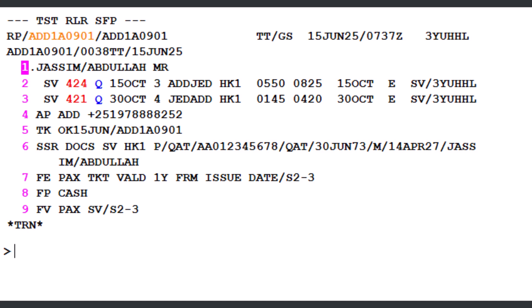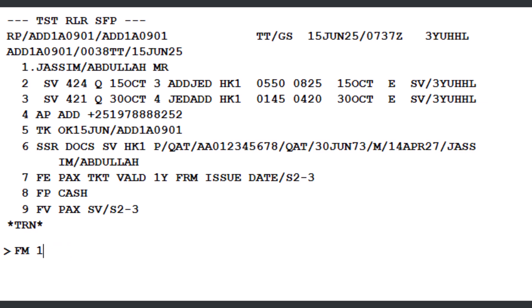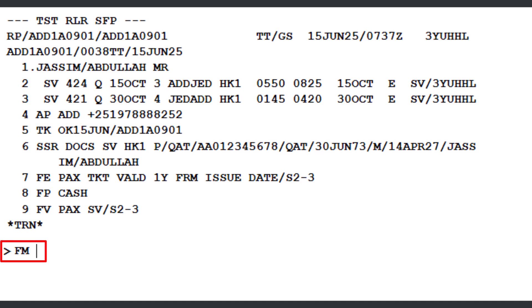The next required ticketing element is commission. Use the FM (commission identifier) followed by the value. This can be a fixed amount or a percentage. For example, to enter a fixed commission of 100 Ethiopian birr, type 100A, where A stands for Amount. For a percentage commission, like 7%, just type the number 7 — no letter needed. The commission value depends on the market and airline policy. In our case, the commission is 0%, so we'll simply enter FM (commission identifier) followed by 0, and press Enter to proceed.